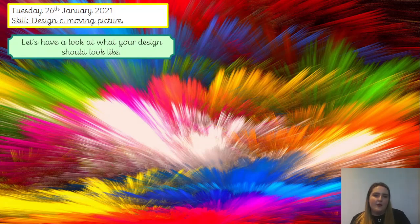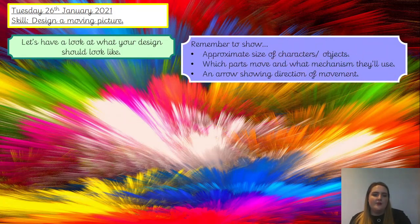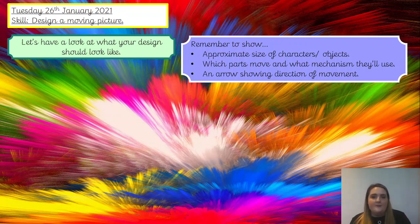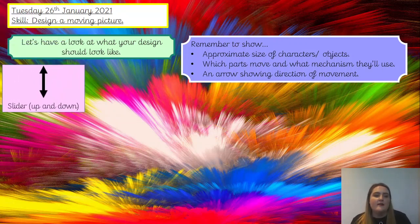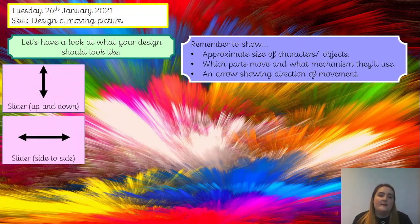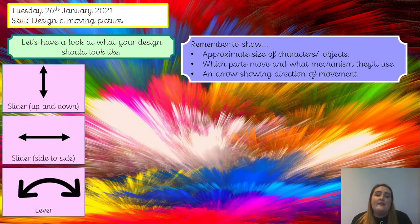Let's have a look at what your design should look like. You need to remember three things: the approximate size of your characters or objects in relation to the scene — not too small and not too big; which parts move and what mechanisms they'll use; and an arrow showing the direction of movement. We've got a slider — label 'slider' and if it's up or down, draw the up-down arrow. If it's a slider that goes side to side, draw that arrow. And if you label 'lever', draw the arc arrow, so that next week you know exactly what you need to do when you're constructing it.